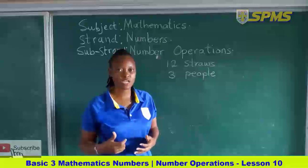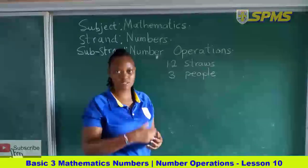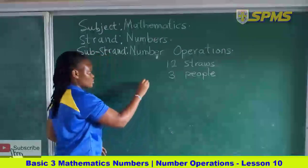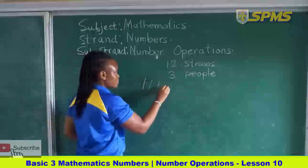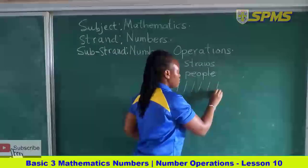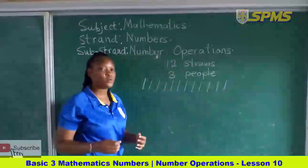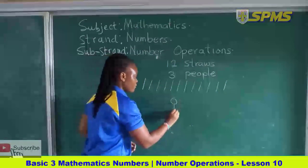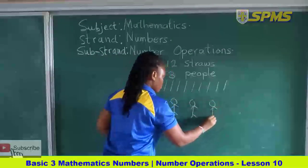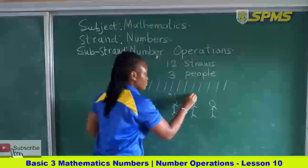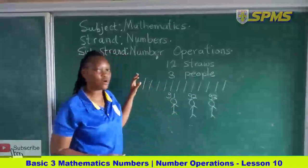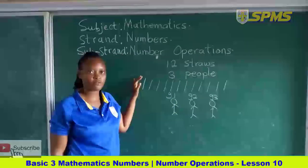That is repeated subtraction — it means we are taking out from the total number of strokes. So let us draw our strokes. We have 1, 2, 3, 4, 5, 6, 7, 8, 9, 10, 11, 12. So we have 12 strokes and then we have 3 people — group 1, group 2, and group 3. We are sharing the 12 strokes among these 3 groups of people.